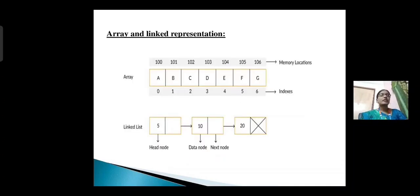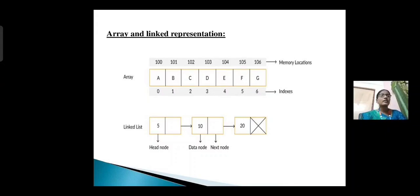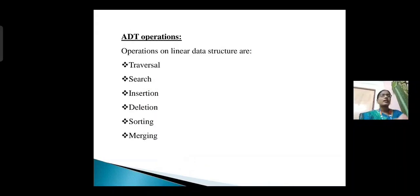Next, array and linked list representation. An array is a group of similar data elements that share a common name. In the array memory allocation diagram, A, B, C, D, E, F, G are the data, 0 through 6 are the indexes, and memory locations start at 100, 101, and so on. A linked list is a collection of nodes which maintain a link. This is a single linked list because only one direction is used, meaning only one arrow mark is used. 5 is the data and the next part is the reference part or pointer to the next data link.